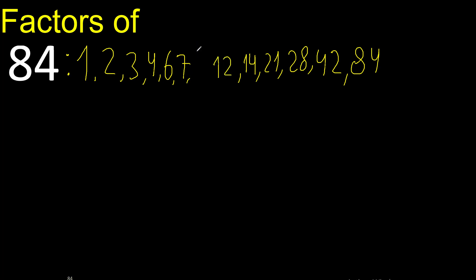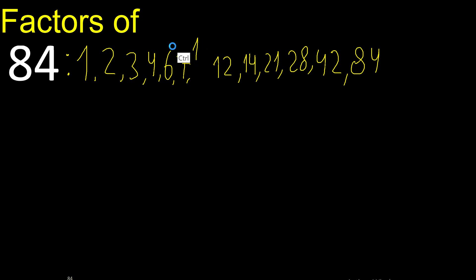Next is 8 but 84 cannot be divided by 8, cannot be divided by 9, cannot be divided by 10, cannot be divided by 11. But 84 can be divided by 12, but 12 is already found, therefore finish.